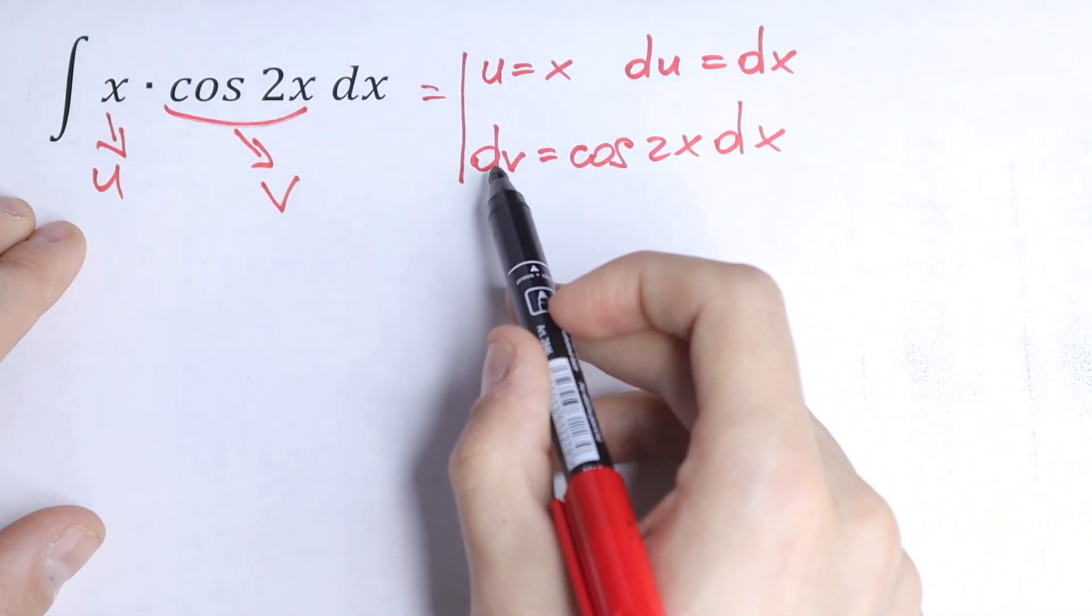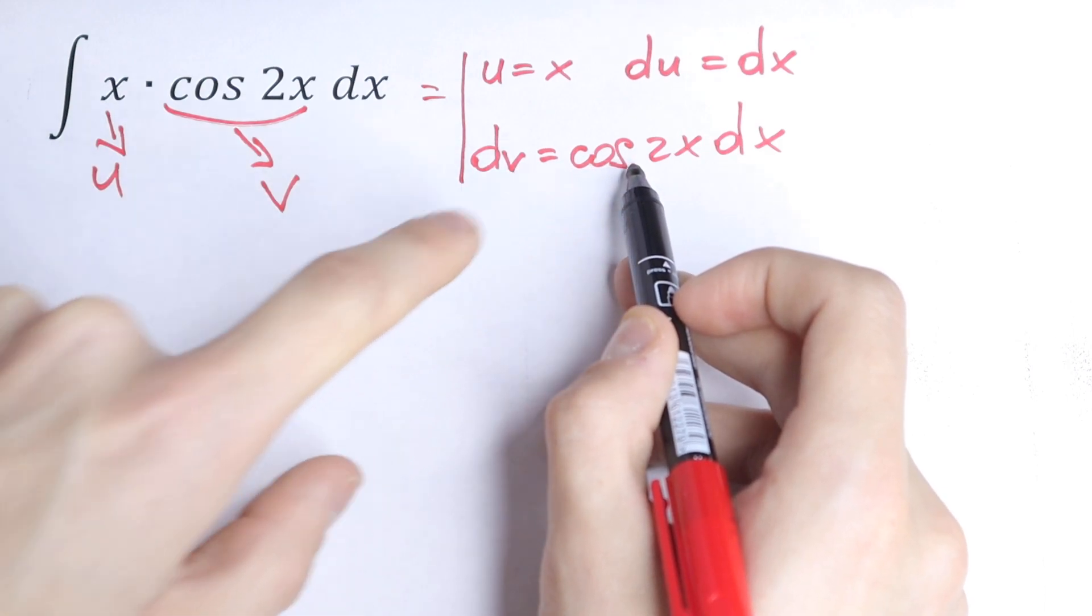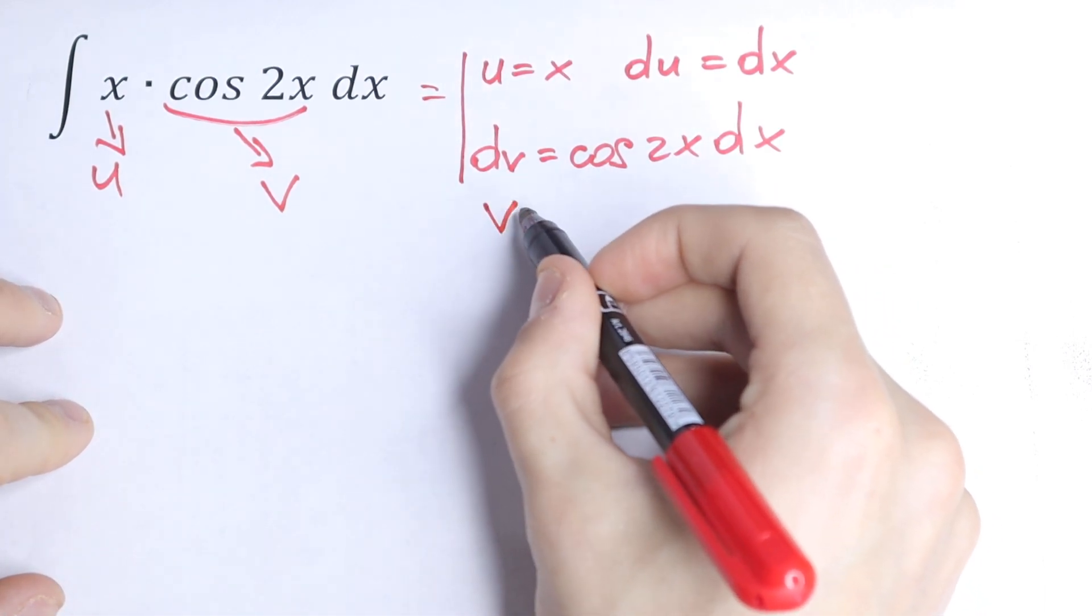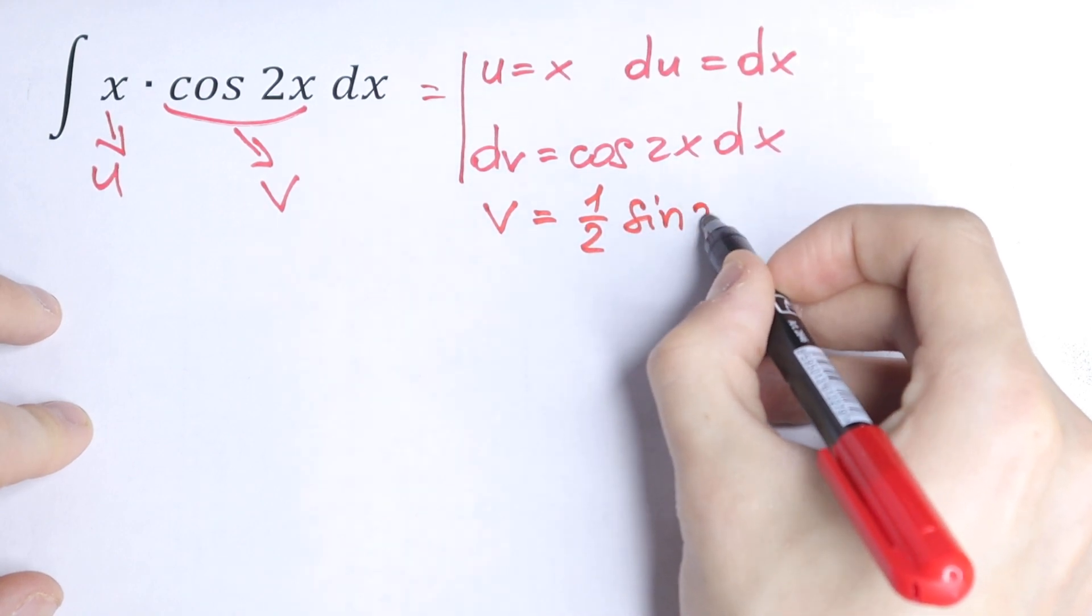We need to find the integral from our function cosine 2x dx. So our v will be equal to one-half sine 2x.